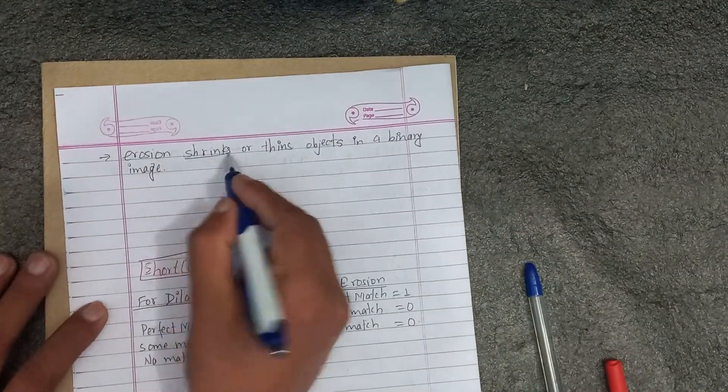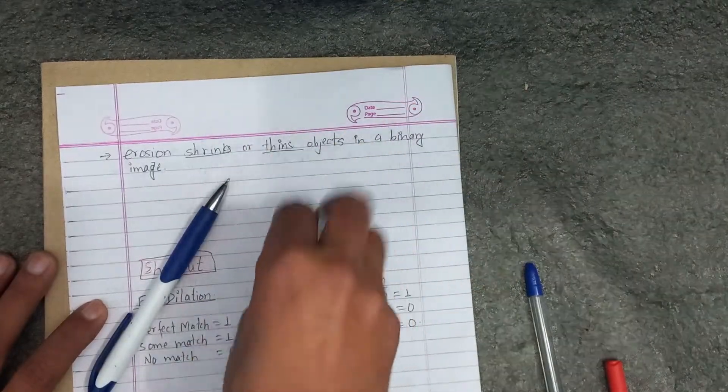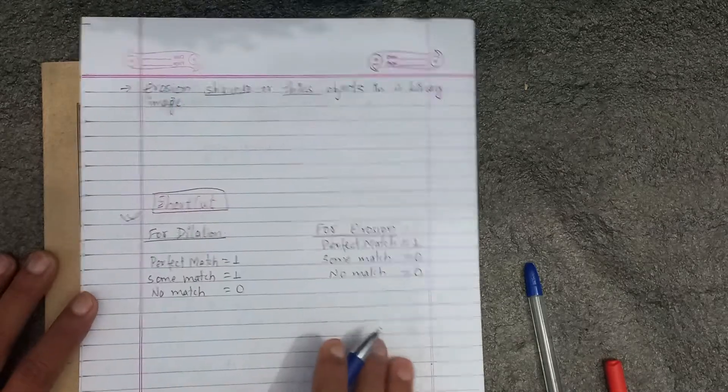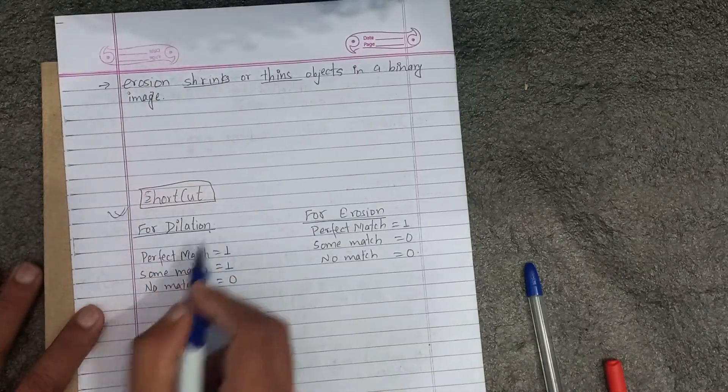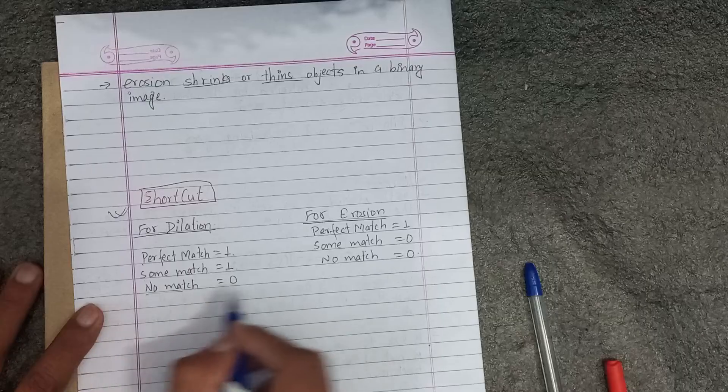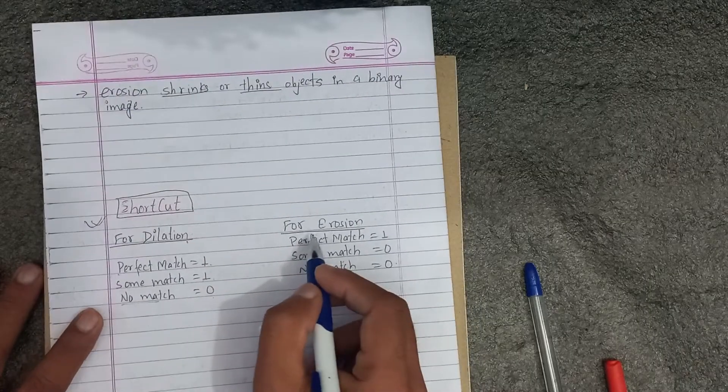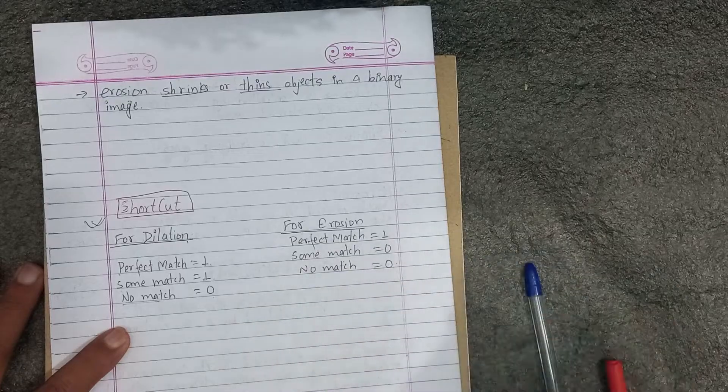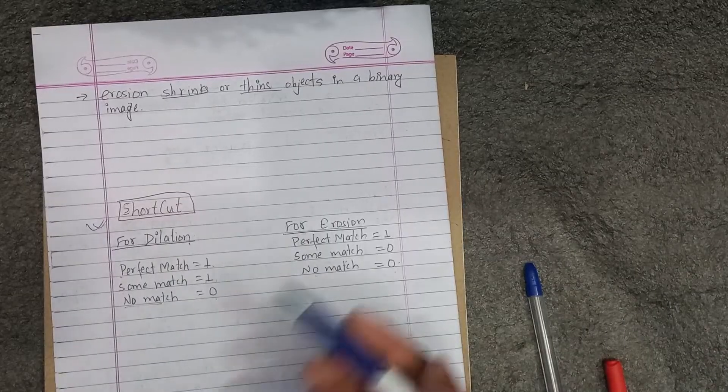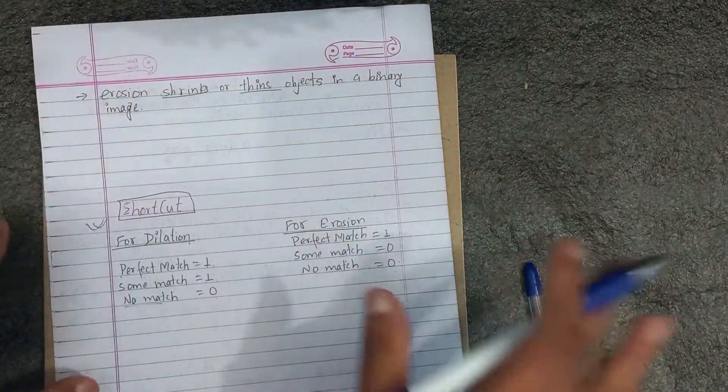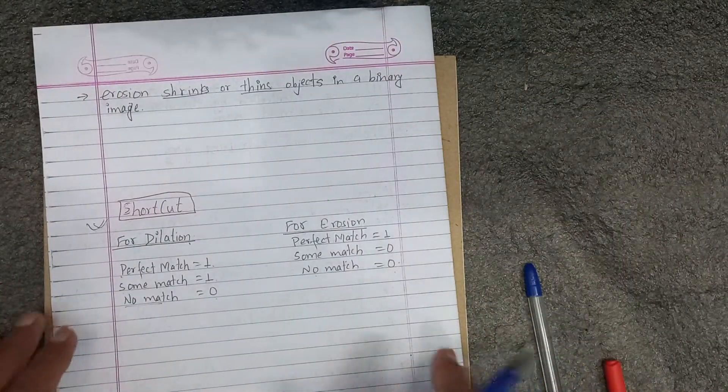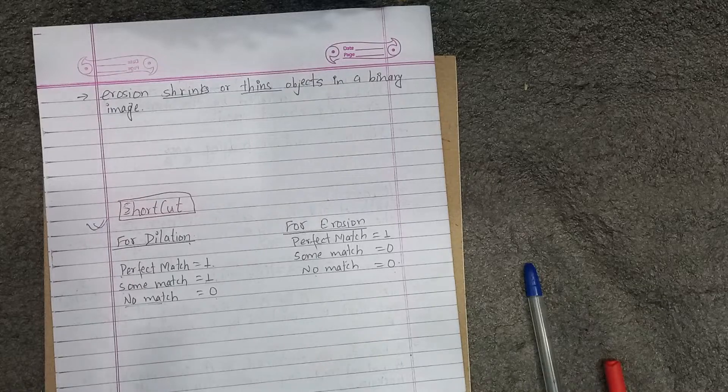Erosion shrinks or thins objects in a binary image. To understand numerically, for dilation, if perfect match we get output 1, some match we get 1, no match we get 0. For erosion, perfect match we get 1, some match 0, no match 0. In erosion, only perfect match gives output. We'll do opening and closing next and past question numericals.